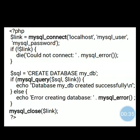First, a new variable is taken: $link, equal to the mysql_connect function. Three arguments are passed: the first is the server argument, which is our localhost; the second is the username; and the third is the password. Observe carefully — the second argument is username and the third argument is password.